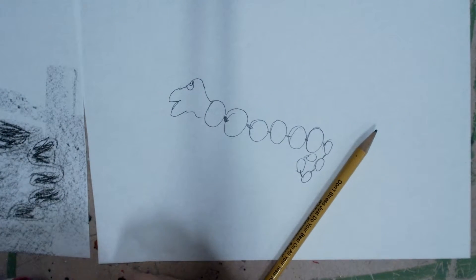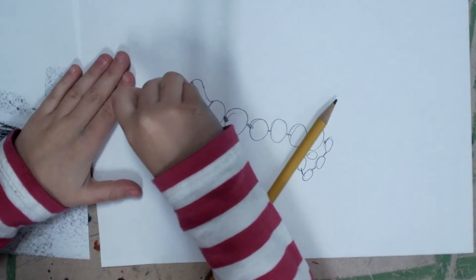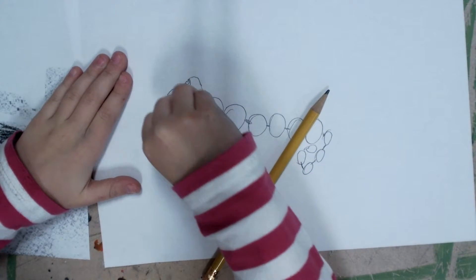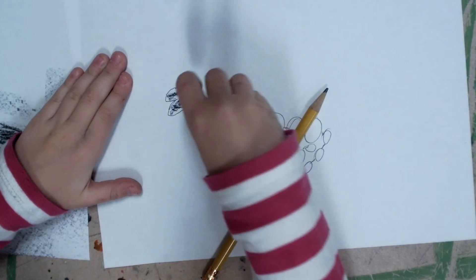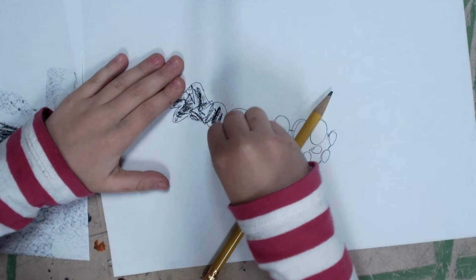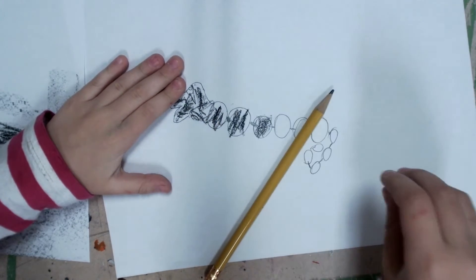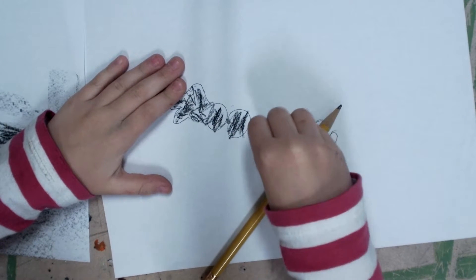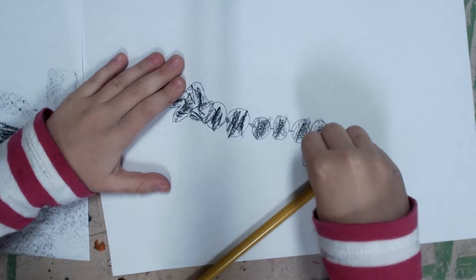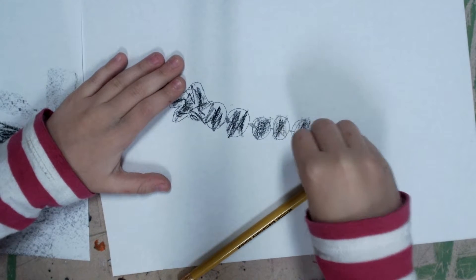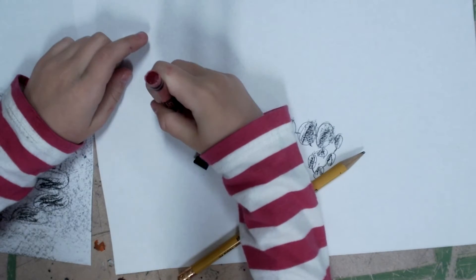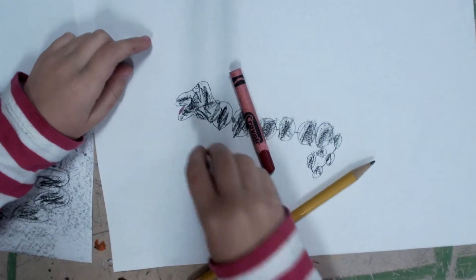First up, what we're going to do is we're going to color the edge. Then you get a red crayon and you mark a little red dot.